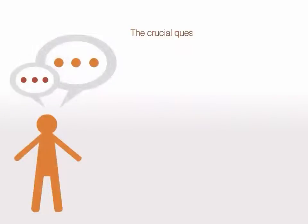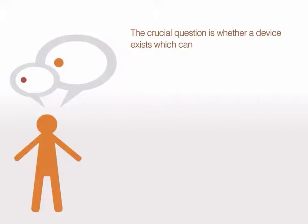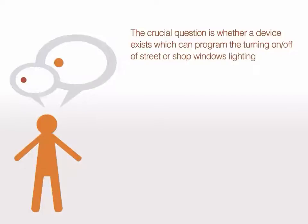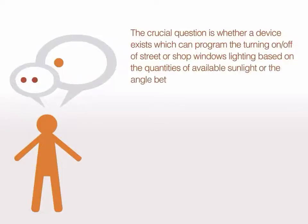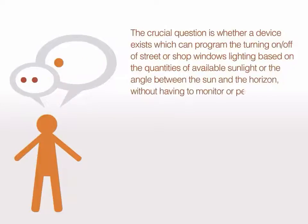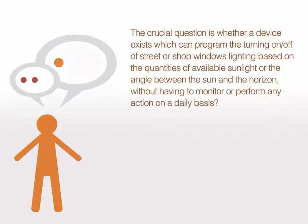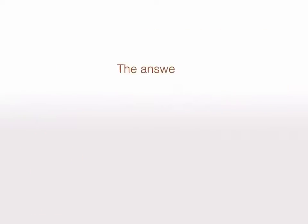The crucial question is whether a device exists which can program the turning on or off of street or shop window lighting, based on the quantity of available sunlight or the angle between the sun and the horizon, without having to monitor or perform any actions on a daily basis. The answer is yes.